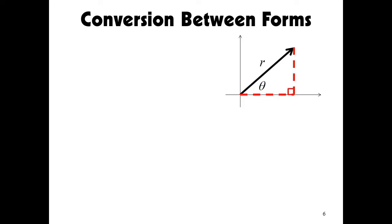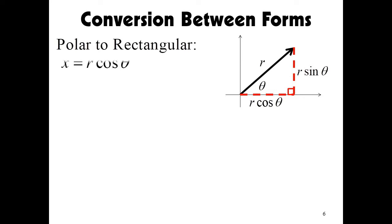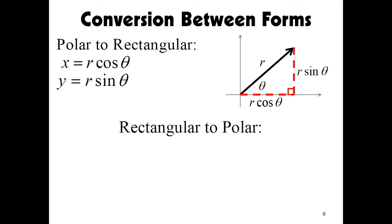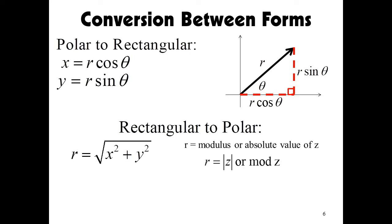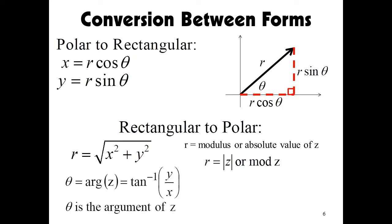Conversions between forms of complex numbers will need the following formulas, which use trigonometric functions from a right triangle. The horizontal side is x equals r cosine θ, and the vertical side is y equals r sine θ. Changing from rectangular to polar form uses r equals the square root of x squared plus y squared — where r is the modulus of z, denoted mod z — and theta, the argument of z denoted arg z, equals the inverse tangent of y over x.